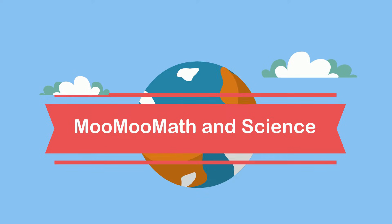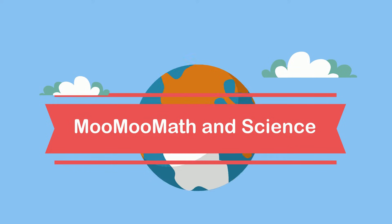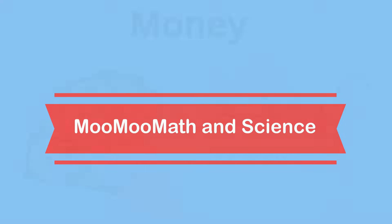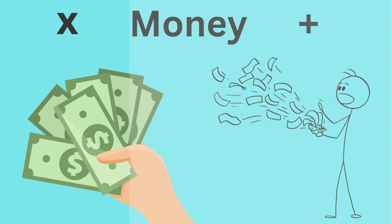Welcome to Moo Moo Math and Science. In this video, we're going to learn how to solve multi-step word problems that involve money. By multi-step, that means we'll do some multiplication and then some addition in order to get a grand total. So, let's get started.